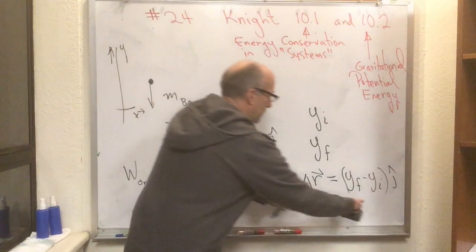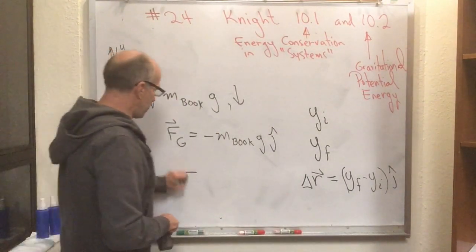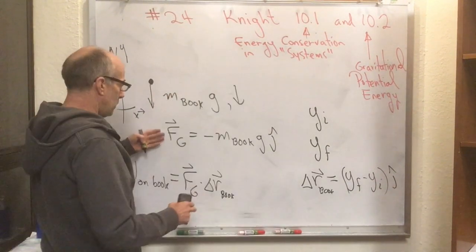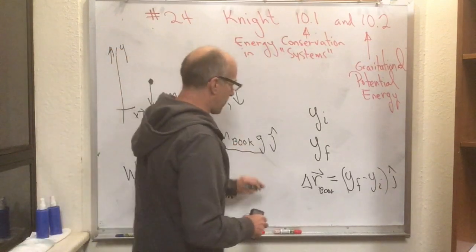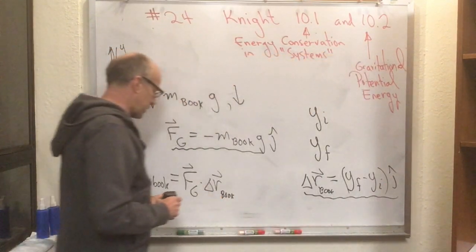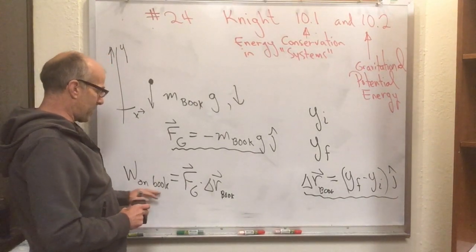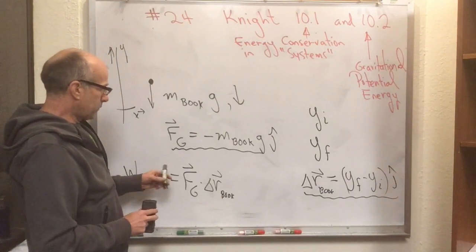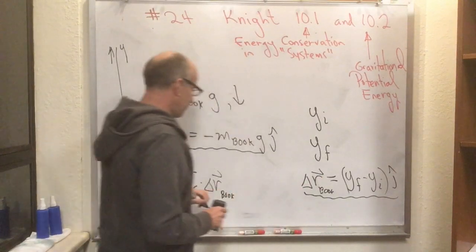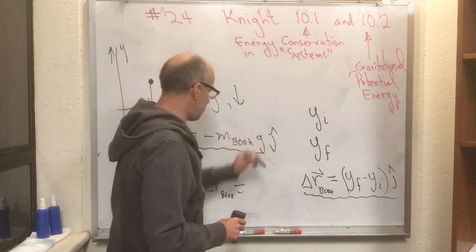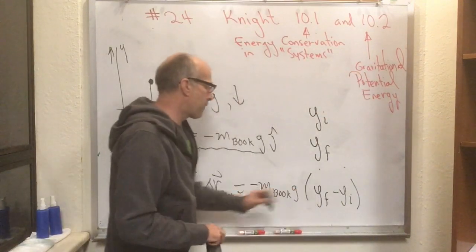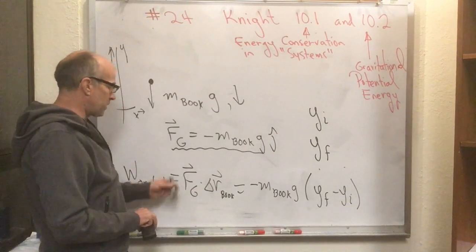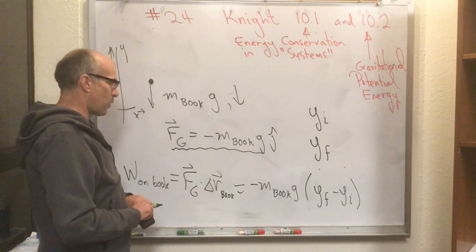So you put this formula and this formula together. The work on the book is FG dot delta R of the book. So there's a nice expression for the force of gravity, and there's a nice expression for the motion of the book. To find the work done by gravity on the book, we take FG dot delta R, and J hat dot J hat is 1. So we get minus M book G from here, and we get Y final minus Y initial from the delta R. So there's your answer. So the work done on the book is minus M book G, Y final minus Y initial.